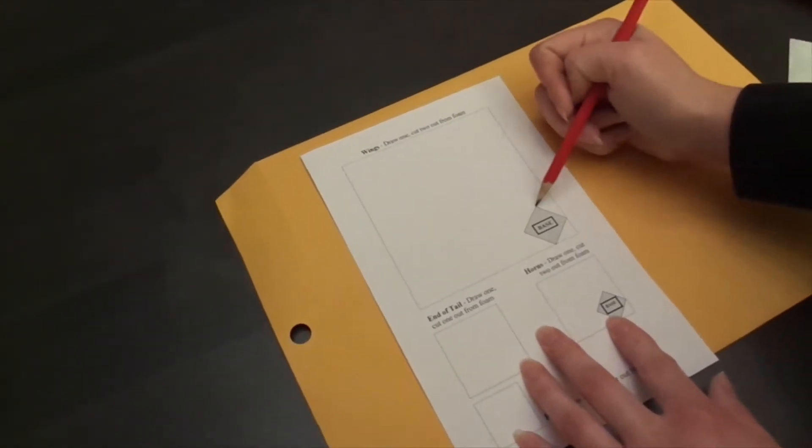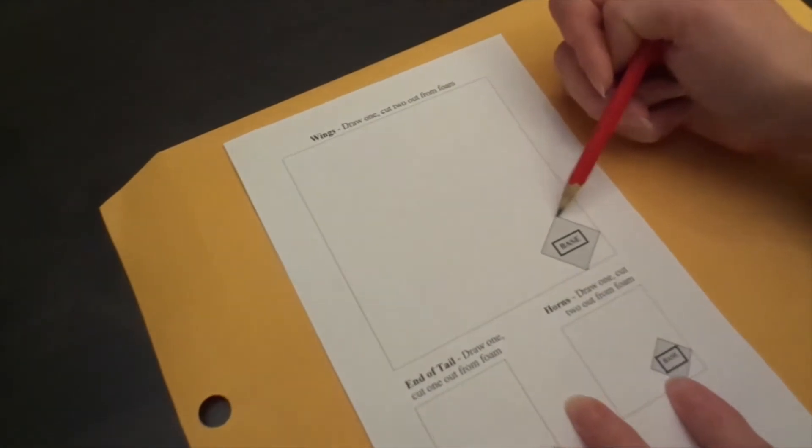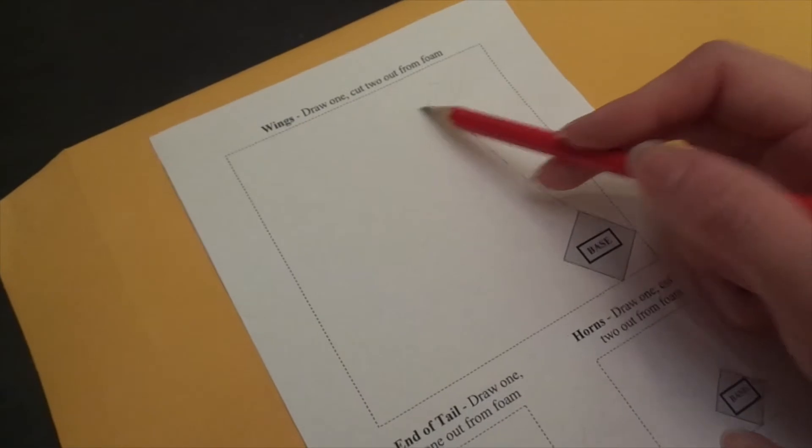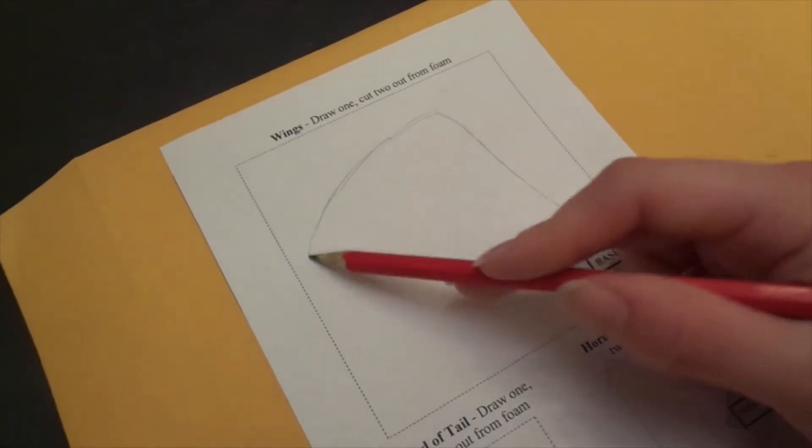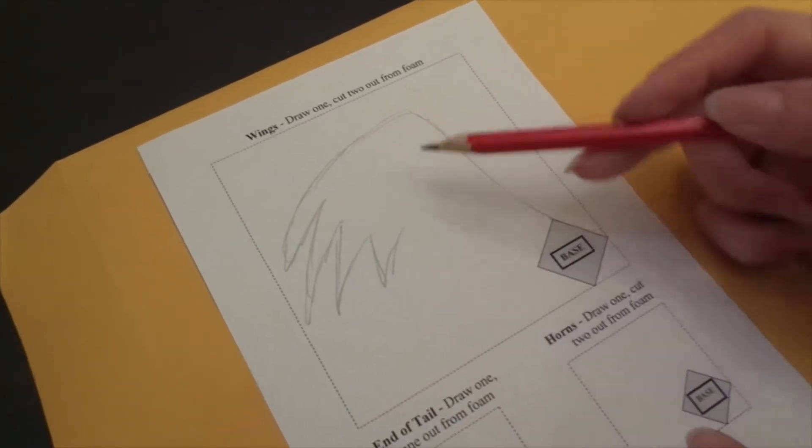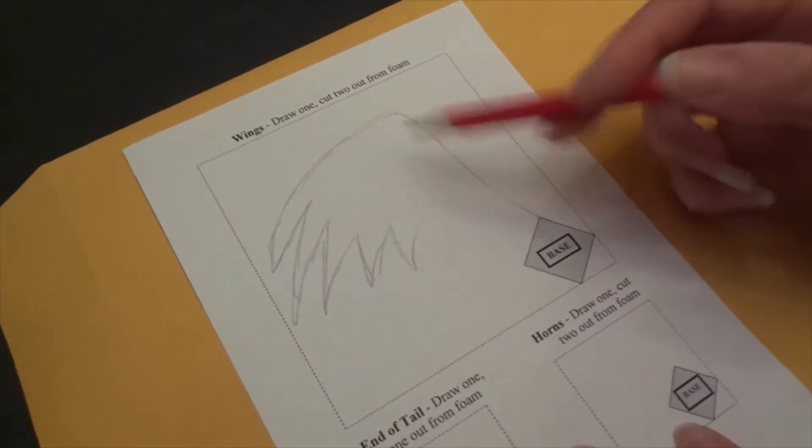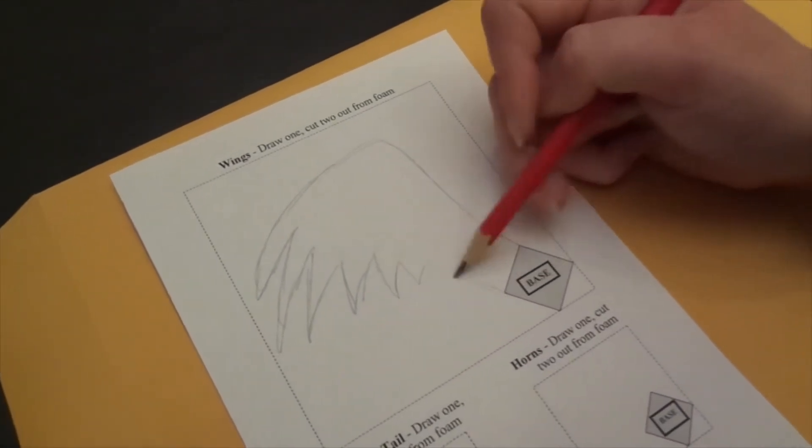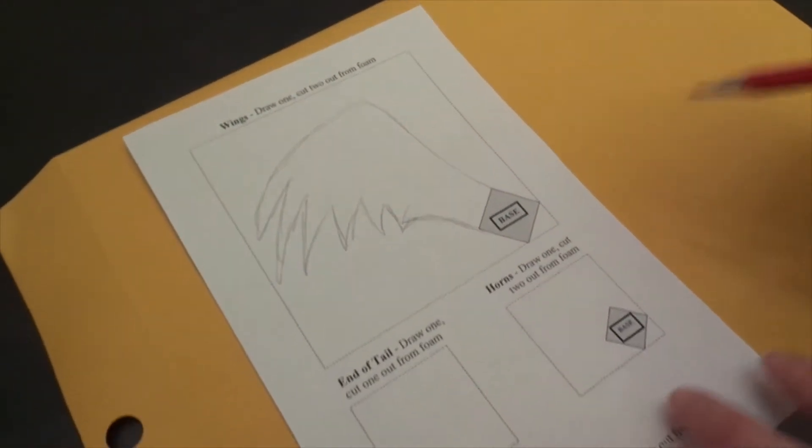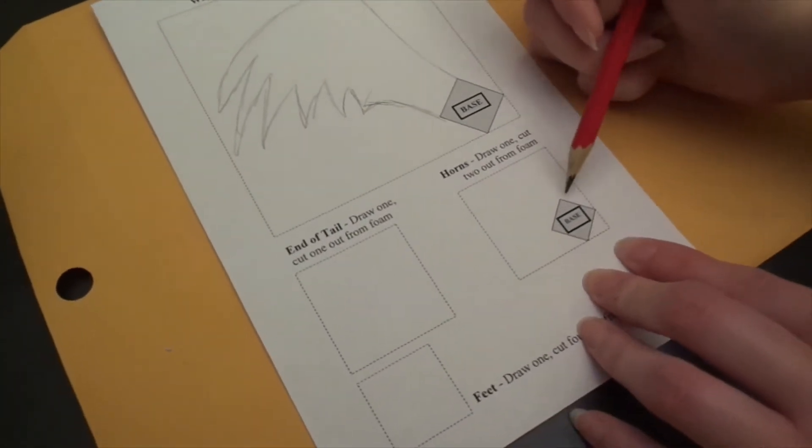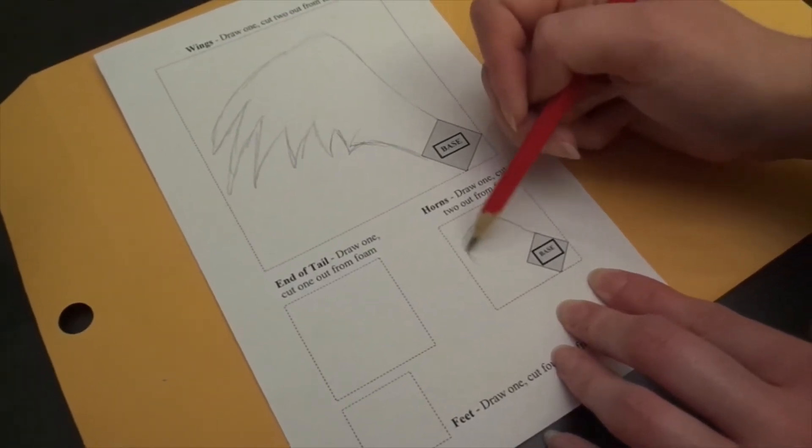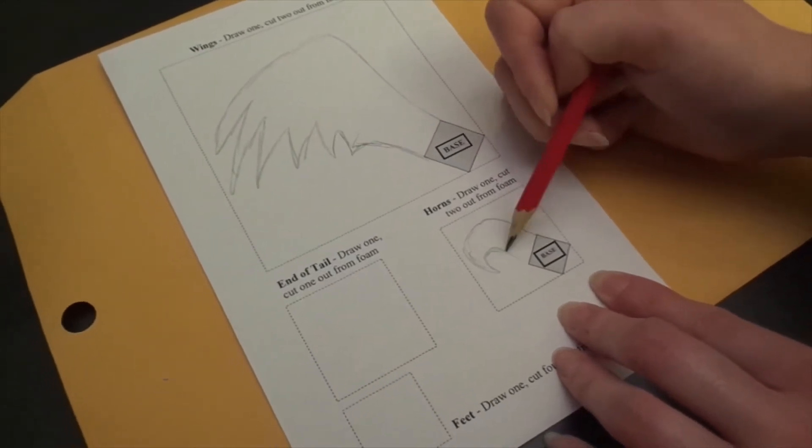And you're going to start at the base. And you're going to be cutting these out of the foam, so if you don't like your shape that much, you can erase it and start over and draw a new one. This is just for your outline. And then same with the horns. You're going to start at the base and say you want a curved horn, you're going to go something like that.